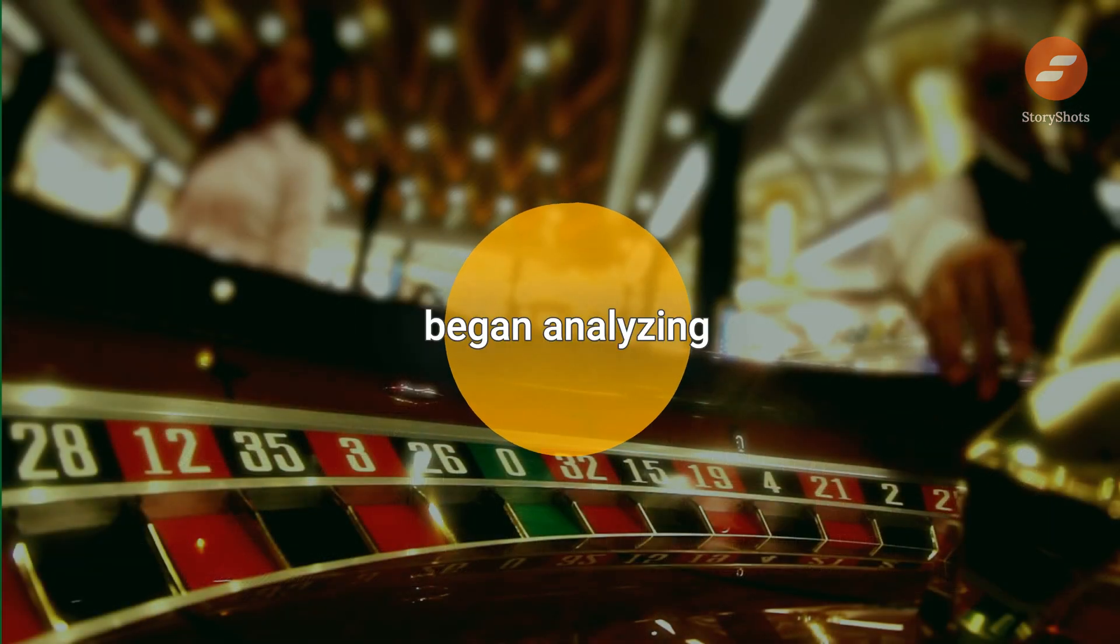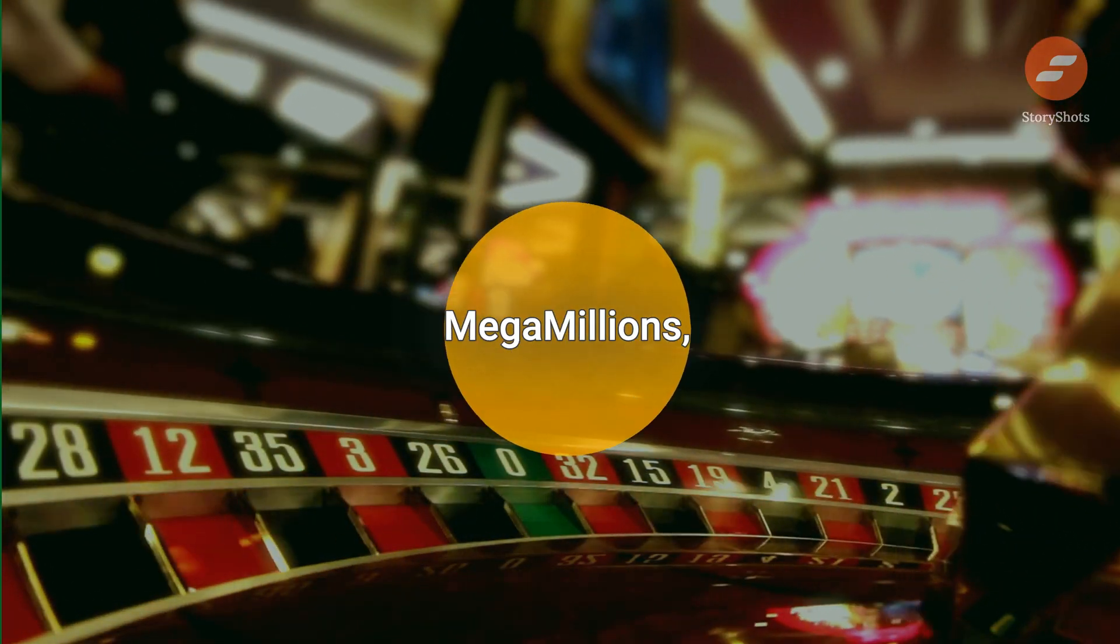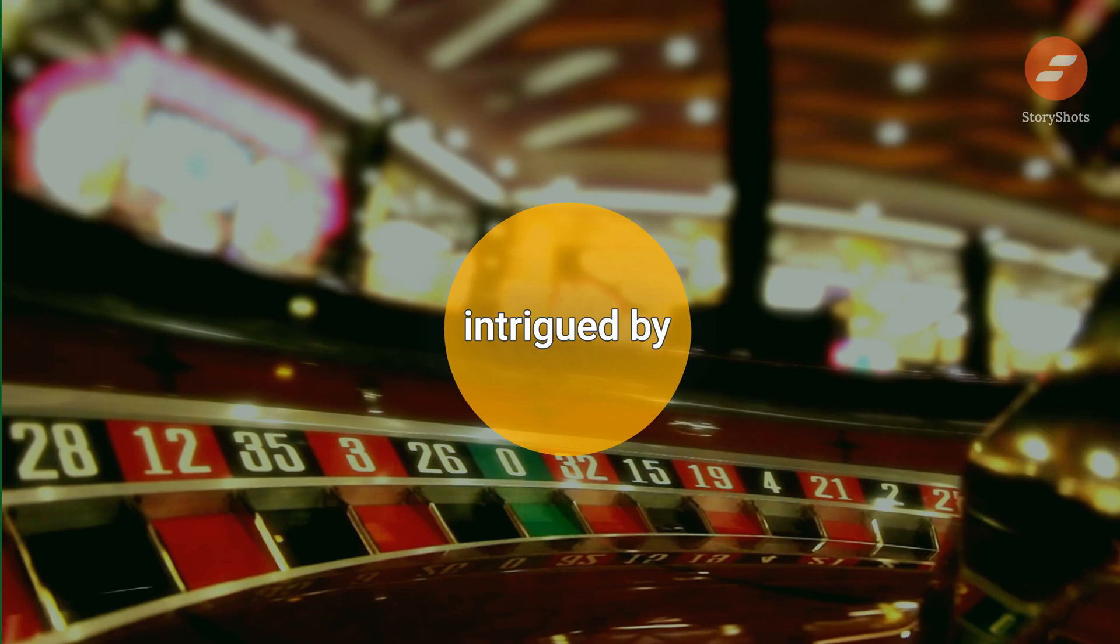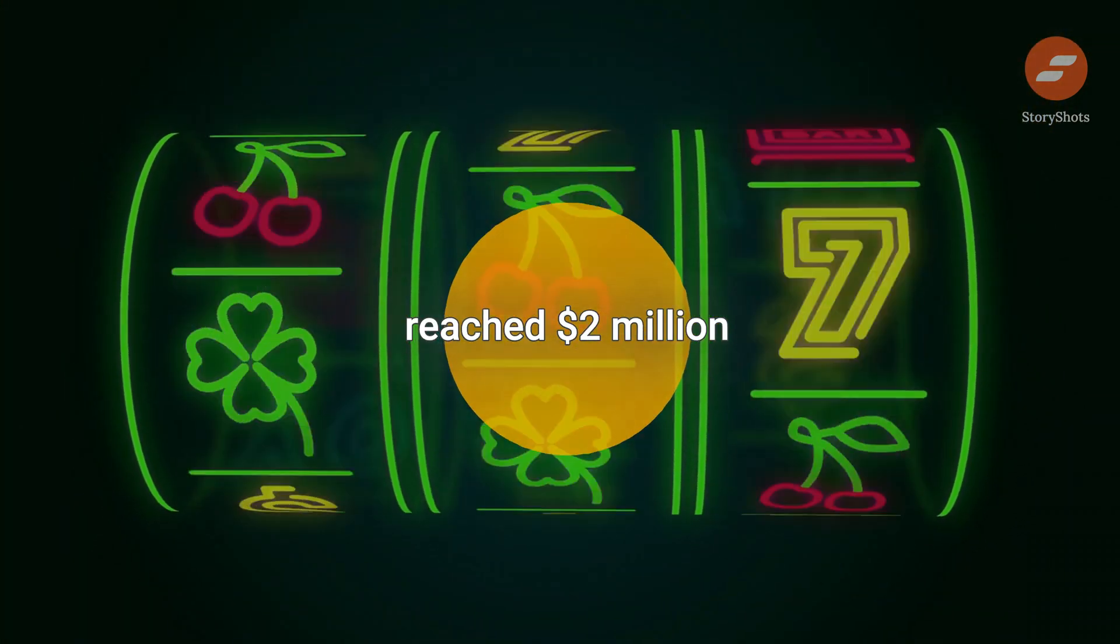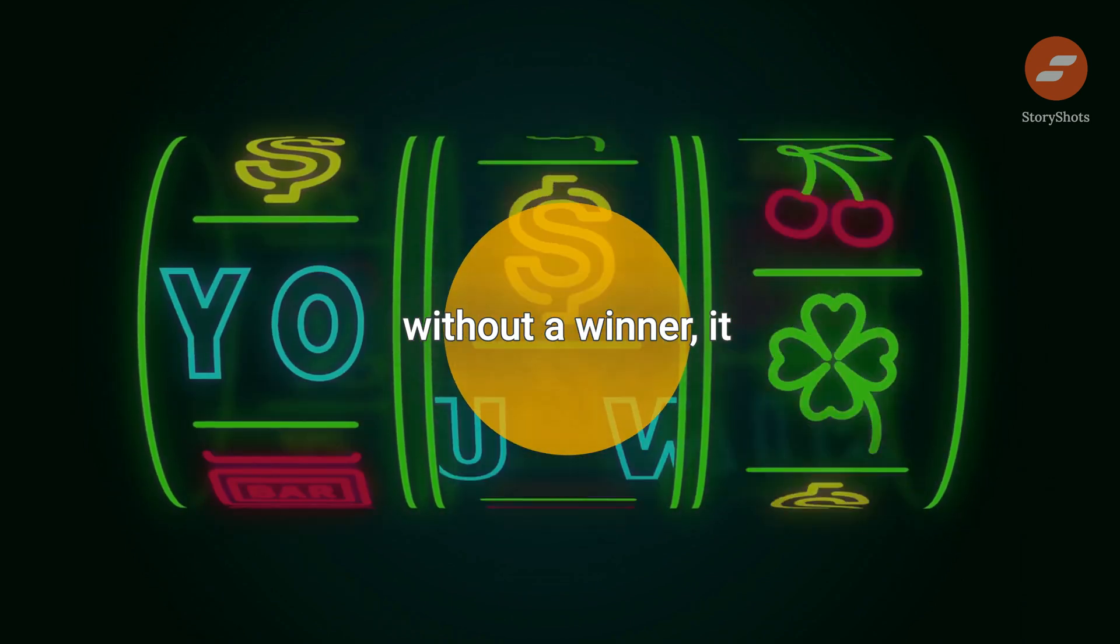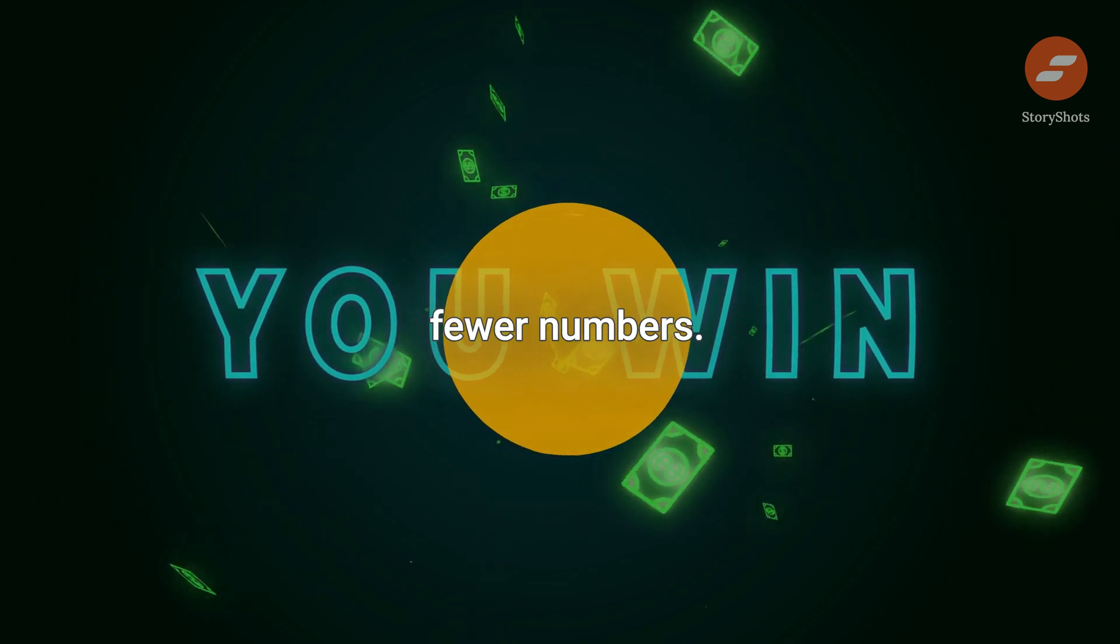The students began analyzing well-known lottery games such as Powerball and Mega Millions, but soon became intrigued by cash windfall. The game was designed so that when the jackpot reached $2 million without a winner, it would roll down and be distributed among players who matched fewer numbers.